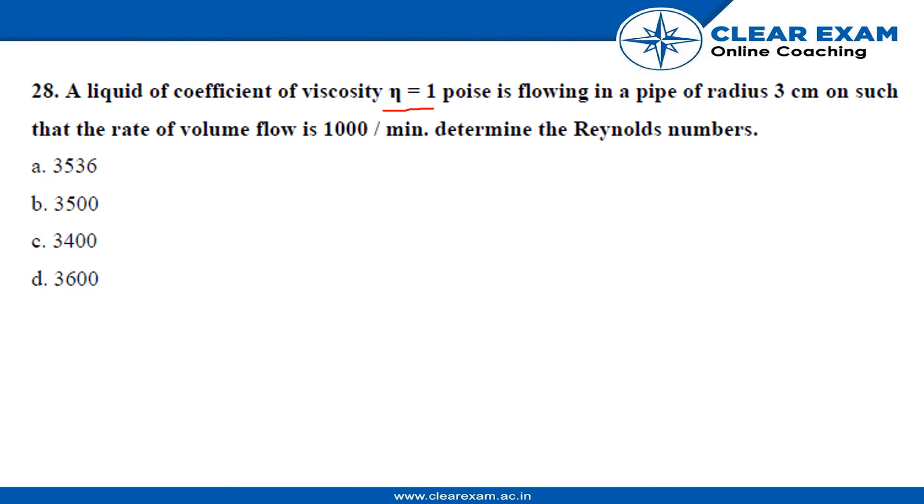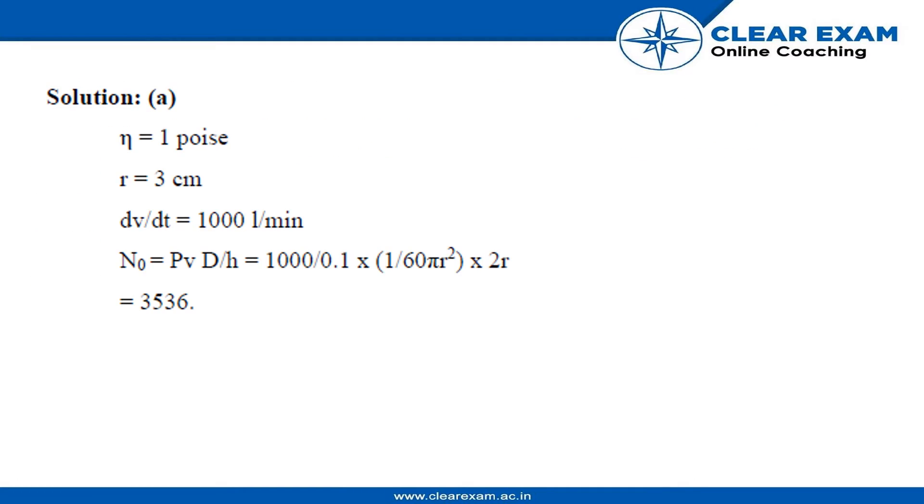So we are given the viscosity which is one poise, radius of 3 cm, and the rate of volume flow which is 1000 per minute, and we need to find the Reynolds number. Let's see how we solve this question.